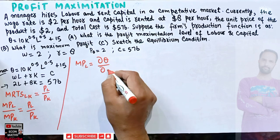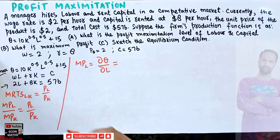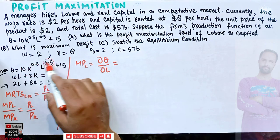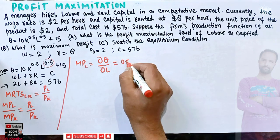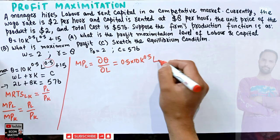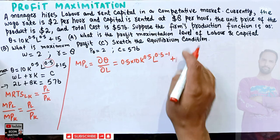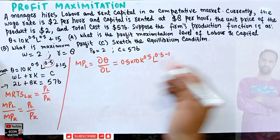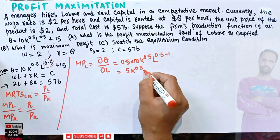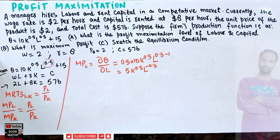The marginal product of labor (MPL) is the partial derivative of the production function with respect to L. Differentiating q = 10K^0.5 * L^0.5 + 15 with respect to L: the coefficient 0.5 times 10 gives 5, so MPL = 5K^0.5 * L^(-0.5). The derivative of the constant term is zero.